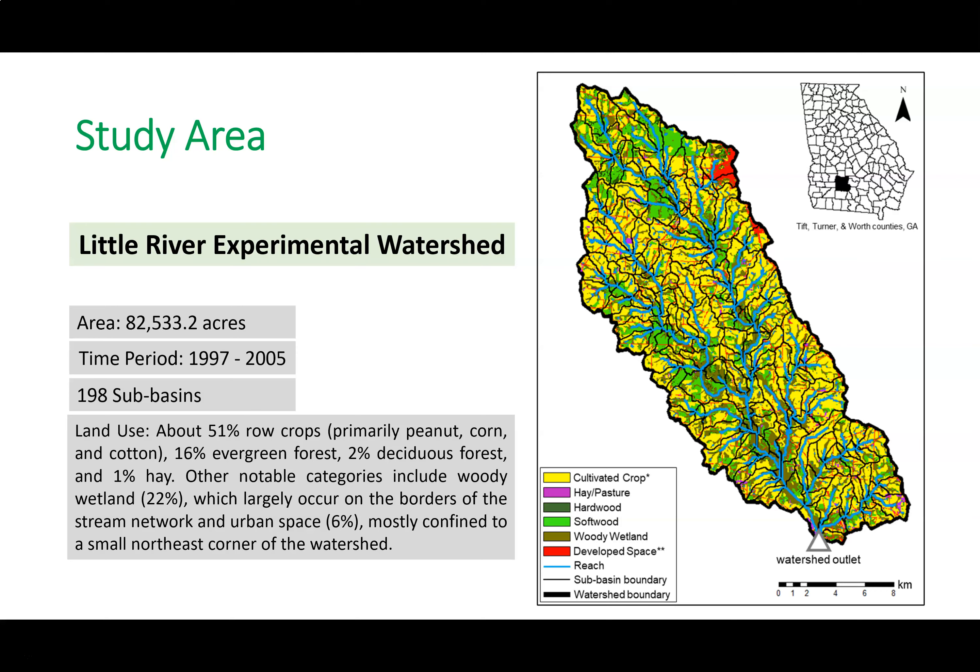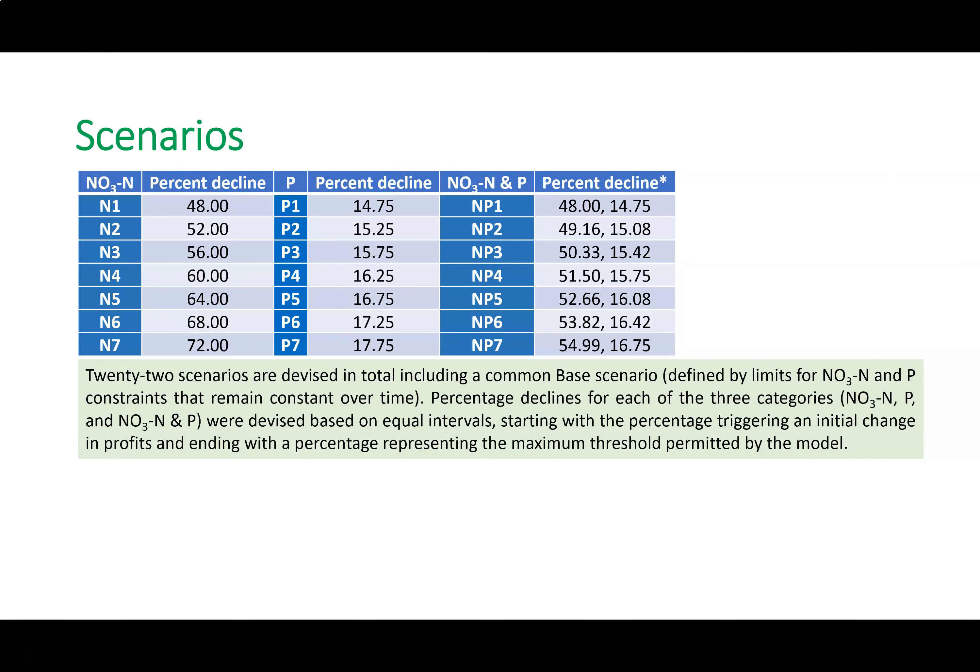We created several scenarios for this study, which we can broadly categorize into three categories. In the first scenario, we manipulate nitrate loadings at the outlet of the watershed. In the second scenario, we manipulate phosphorus at the outlet. In the third scenario, we manipulate both nitrate and phosphate limits at the outlet of the watershed.